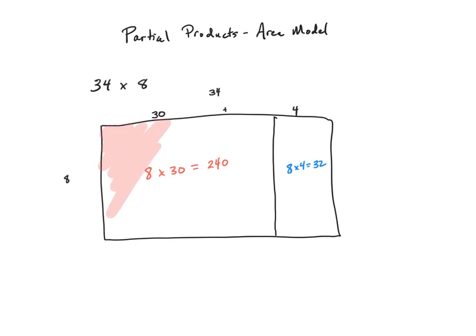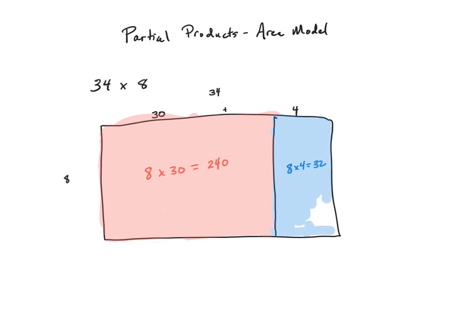I'm going to shade this in so we can see our two different partial products. When we combine this 8 by 30 rectangle with our 8 by 4 rectangle, we end up making our 34 by 8 large rectangle that represents our problem 34 times 8. We call each of these rectangles our partial products because they're part of the product of 34 times 8. So to find the entire product, I'm going to take the red rectangle which has an area of 240 square units, and add it to the blue rectangle which is 32 square units, to get a product of 272. So 34 times 8 is equal to 272.